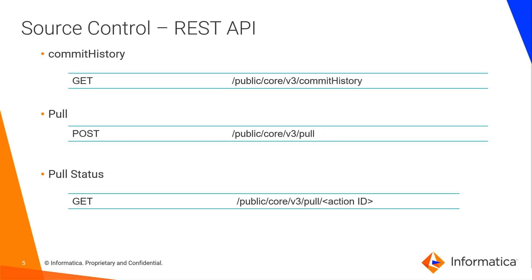The next API is the Commit History API, used to get a list of all of the commits that have been done on that particular IICS organization for Source Control. You can use that to get old commit hashes in order to use them in the next API, which is the Pull API. Pull is basically used to get any older version of the assets, and for that we will have to pass in the commit hash with which that particular version of the asset was committed. The final API is the Pull Status, which is a GET call that will tell you the status of the pull when you pass the action ID in the API call. These are the six APIs that IICS provides to perform Source Control in any IICS organization.